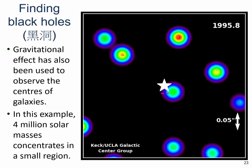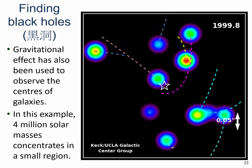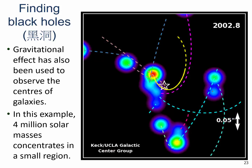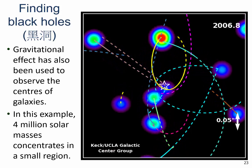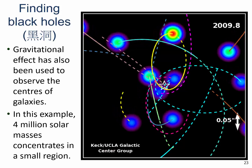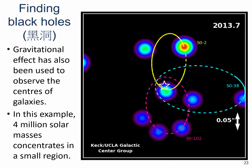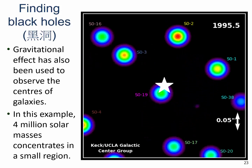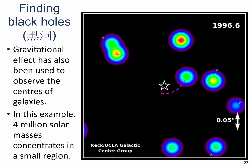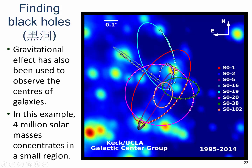Another application of Newtonian gravity is to find black holes. This animation shows some stars near the galactic center — the center of our own Milky Way galaxy, about 25,000 light years away from us. We can trace the orbits of all those stars, and they tell us that within a very, very small region at the center, there is a mass of about 4 million solar masses — concentrated in such a small region that the only reasonable explanation is a supermassive black hole.